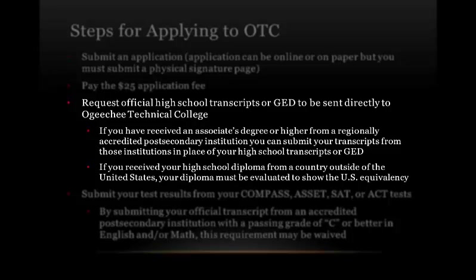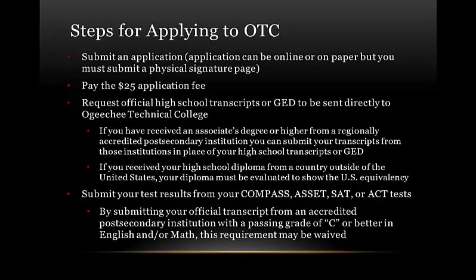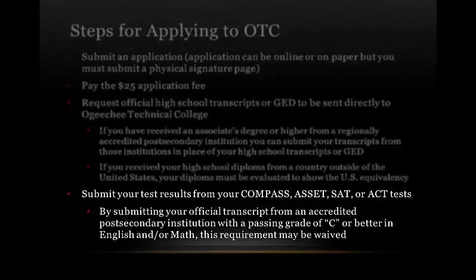If you received your high school diploma from a country outside of the United States, your diploma must be evaluated to show the U.S. equivalency. In addition, you must submit either your COMPASS, ASSET, SAT, or ACT test results, and these tests must be five years old or less. Or you may request your official transcript to be sent from an accredited post-secondary institution with a grade of C or better in English and/or math. These courses may waive the requirement for the COMPASS placement testing.